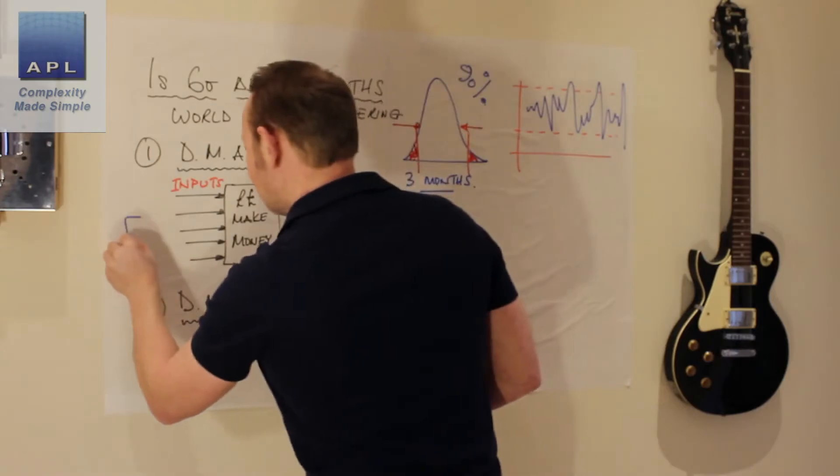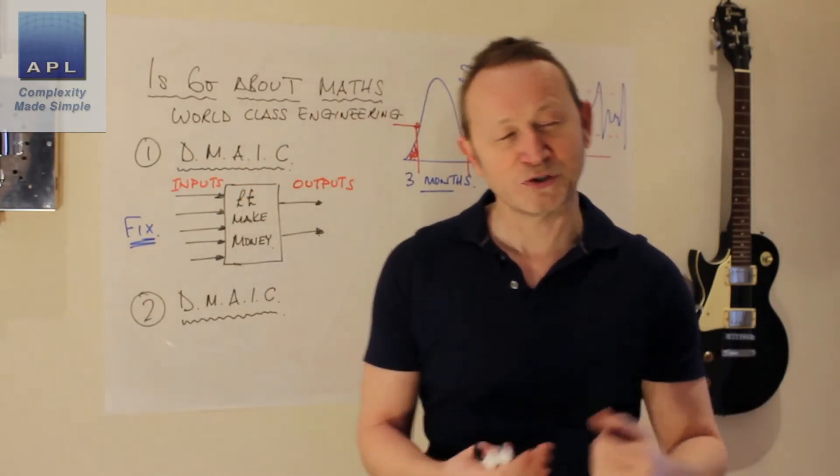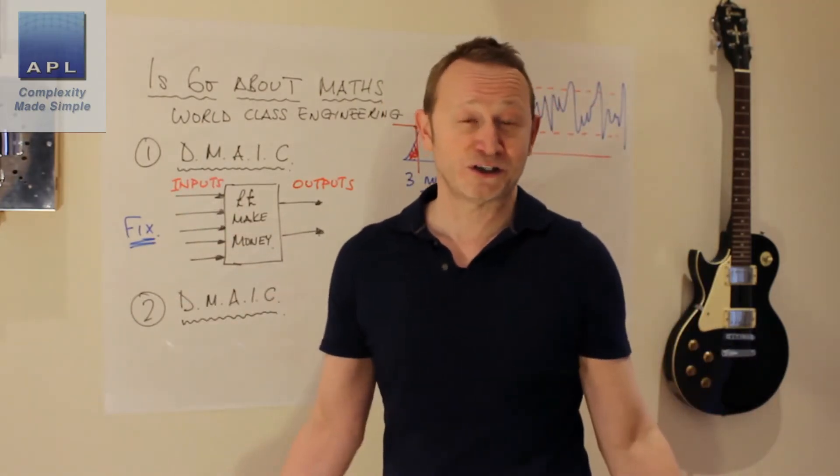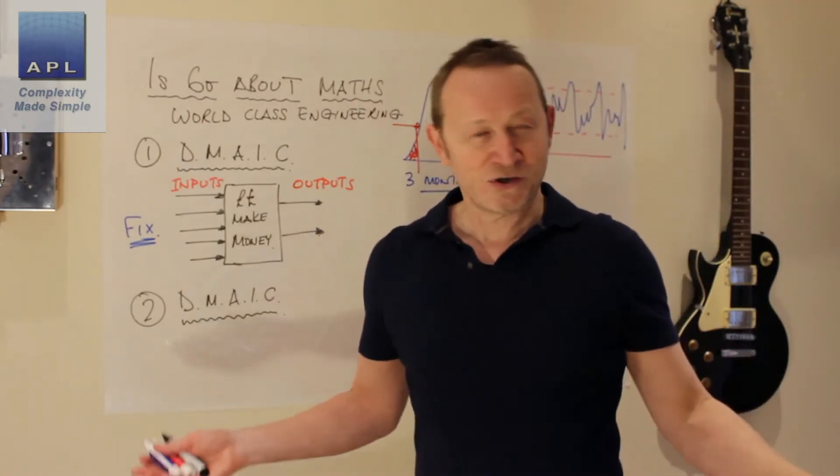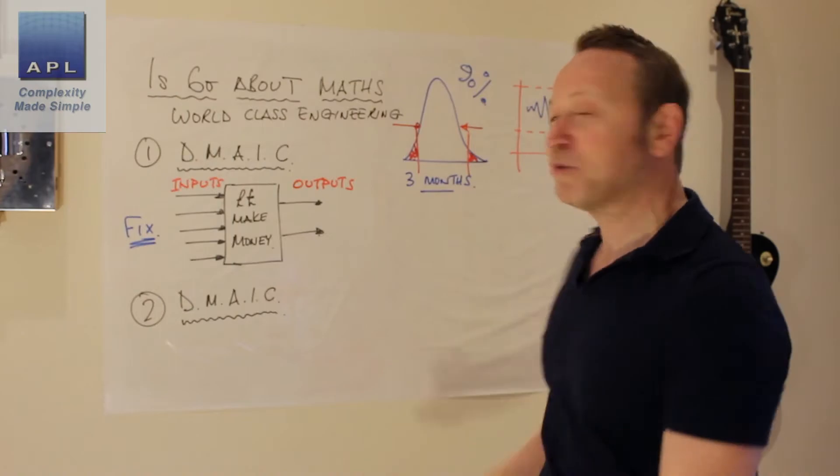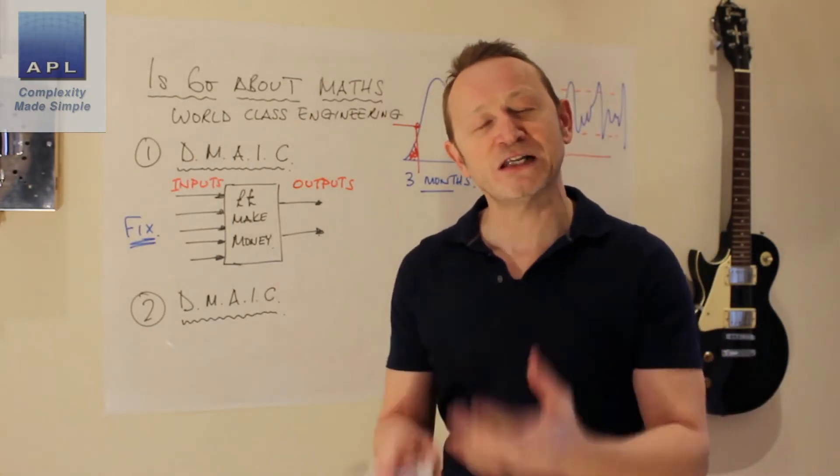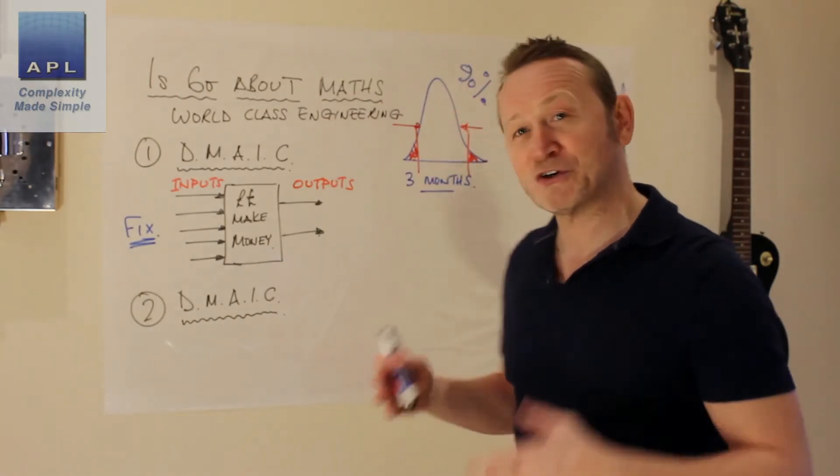And essentially, what are we going to do? We are going to fix the input variables on this side of the process. And we are going to use the laws of physics to our advantage. Now, is there any maths involved in this? Pretty much no. There's a few simple statistical graphs here, but it's very light, light load of mathematics. Just a couple of simple diagrams.